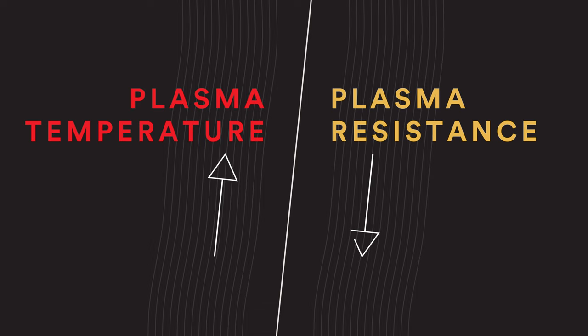However, it turns out that as the plasma increases in temperature, the resistance decreases. Because of this trend, we can only achieve temperatures of a few million degrees using resistive heating, which is far shy of our 200 million degree goal.